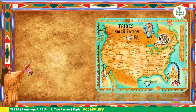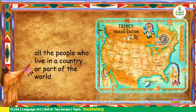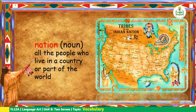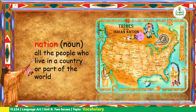Look at that map and the definition. All the people who live in a country or part of the world — so what do you call this? That is what we call a nation. It is a noun. So this map or this place is the tribes of the Indian nation — the American Indian.